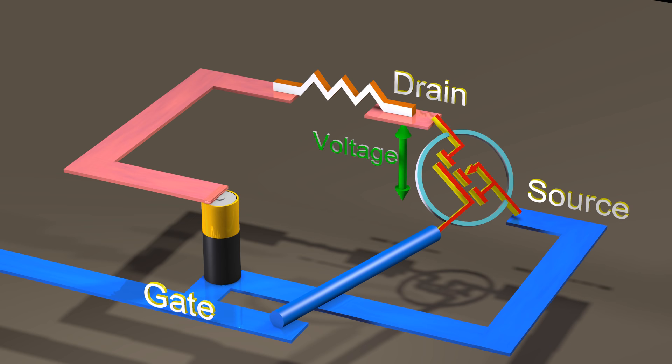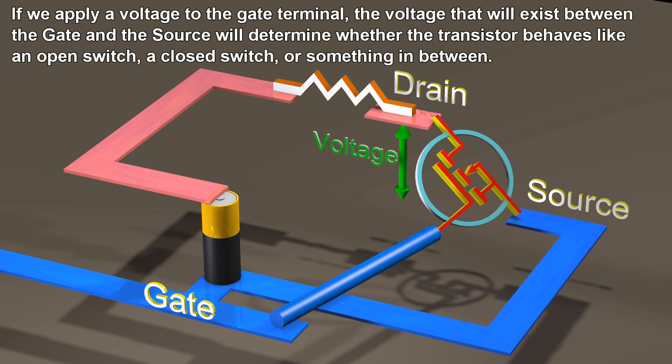If we apply a voltage to the gate terminal, the voltage that will exist between the gate and the source will determine whether the transistor behaves like an open switch, a closed switch, or something in between.